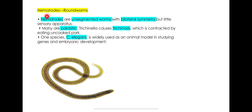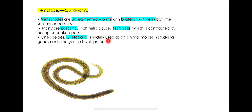Nematodes, or roundworms, are the next phylum. They are unsegmented — they don't have segmentation or specialization of certain segments. Their body symmetry is bilateral. Most of them are parasitic, meaning they live in a parasitic relationship and cause diseases like trichinosis. An example is Trichinella, caused by eating uncooked pork.